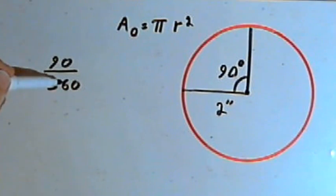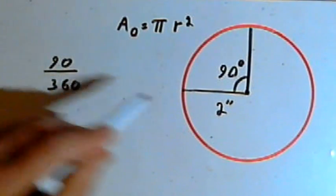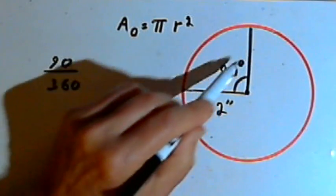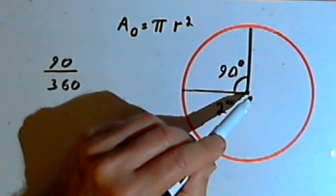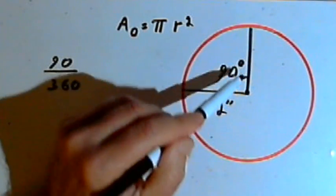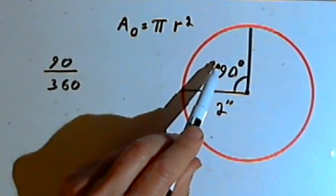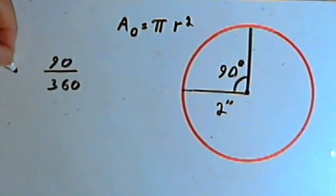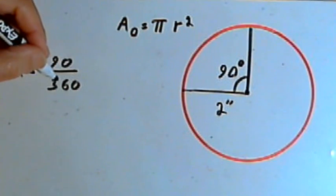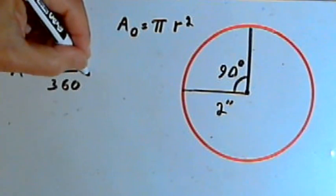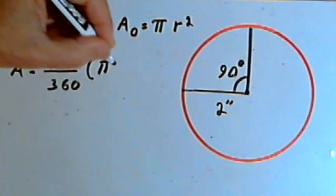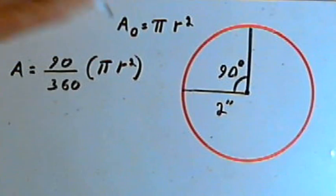Now if I take that fraction and multiply it by the area of the entire circle, then that will tell me the fraction of the area that is in this sector. So that means the area of my sector is going to be 90 over 360 times the area of the entire circle, which is pi r squared.